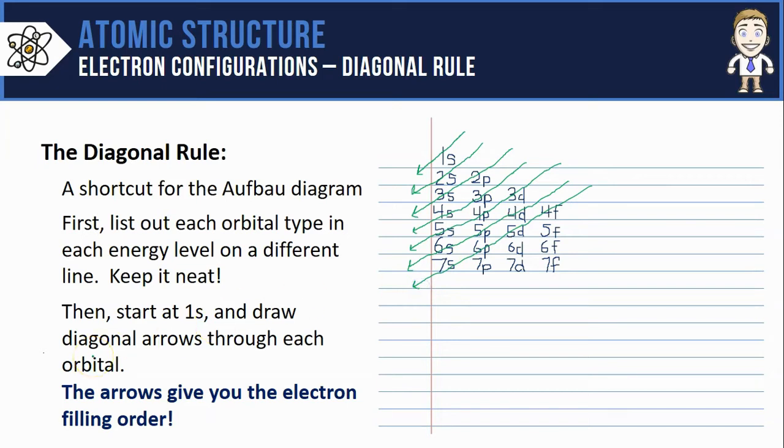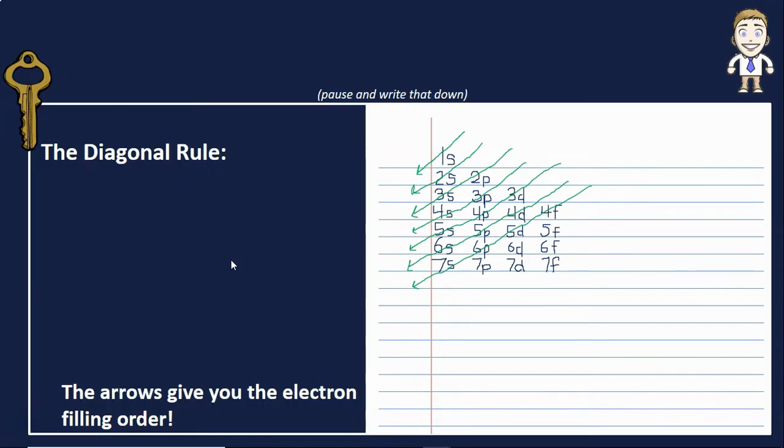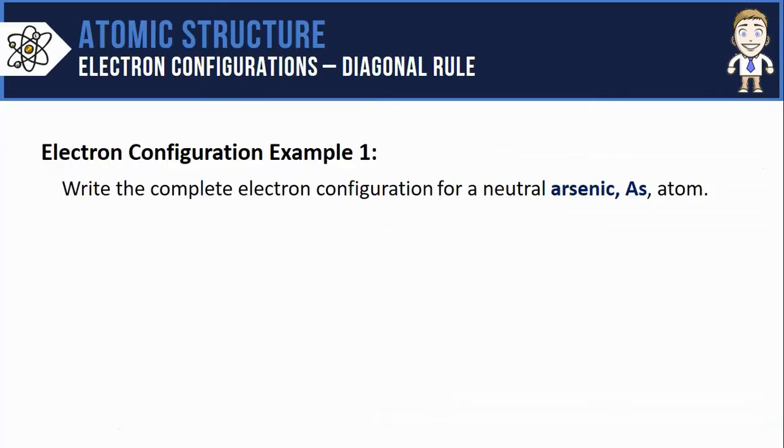With the diagonal rule, you can never be wrong about which electrons to put in which orbitals. Being able to draw out your own diagonal rule is definitely one of the key ideas for this video. Make sure you've paused and taken a moment to write it down.